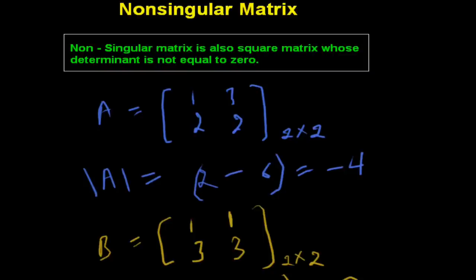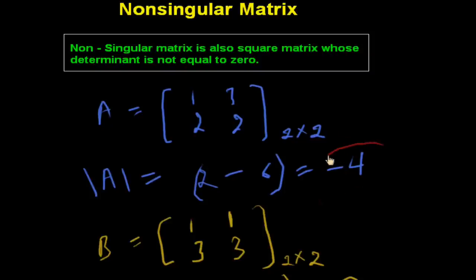Suppose A is a square matrix with 2 rows and 2 columns — values 1, 2, 3, 2 — and its determinant is minus 4. So this is a non-singular matrix because its determinant value is not zero.